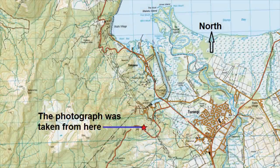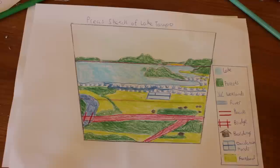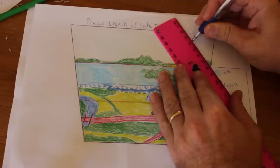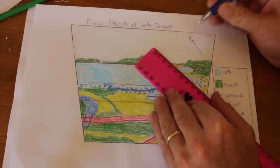Now when I compare my sketch to a topographic map, I can see that the mountain was actually northeast from where I was standing, so therefore north must be in this direction, so I'll draw my north point.